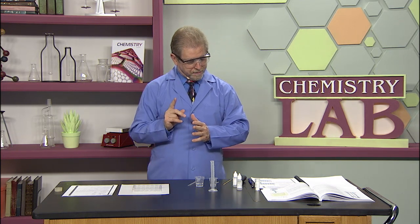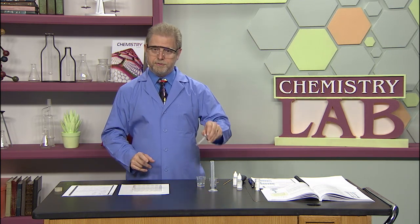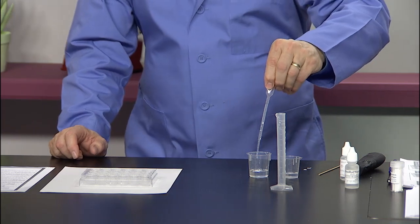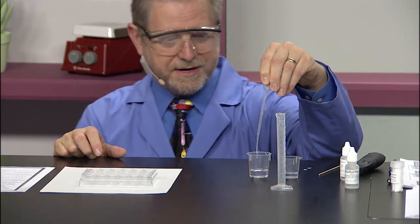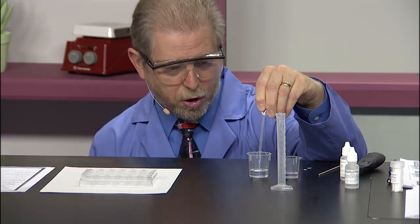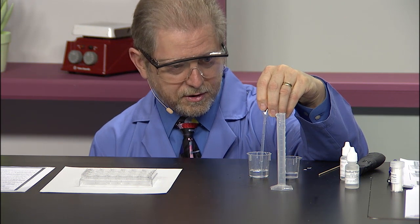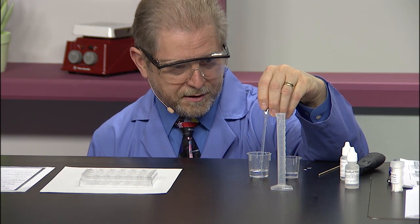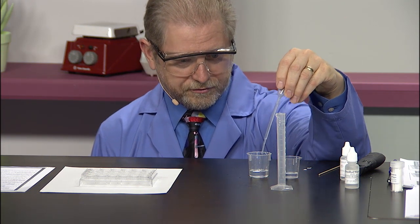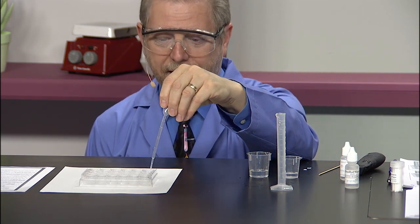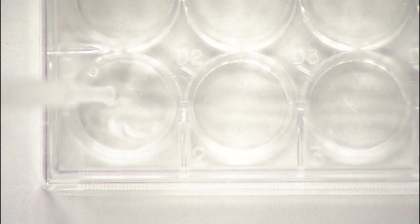The next thing we want to do is take one milliliter again using the same pipette and put it into well plates D1 and D2. Since I'm only going to do this once, I'm just going to put that into well D1.